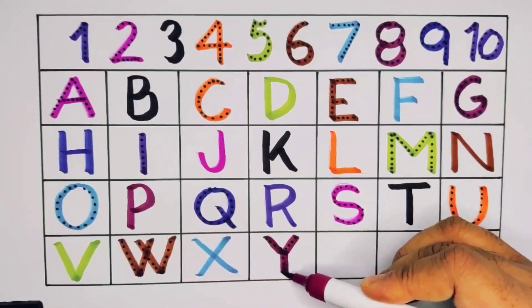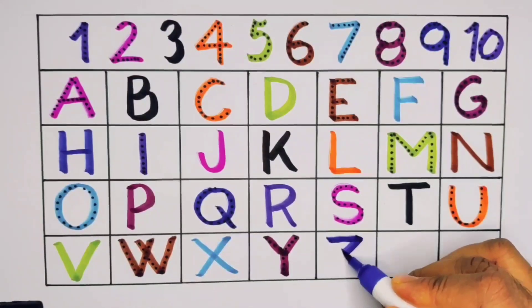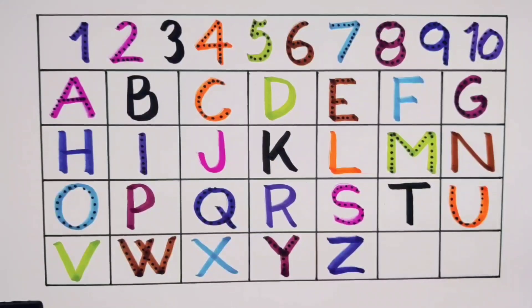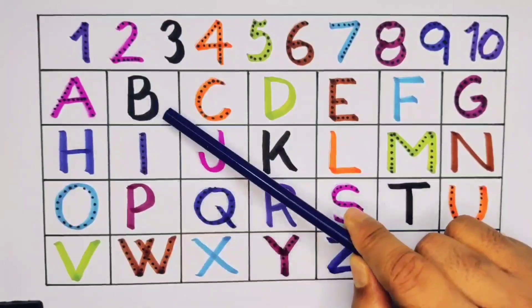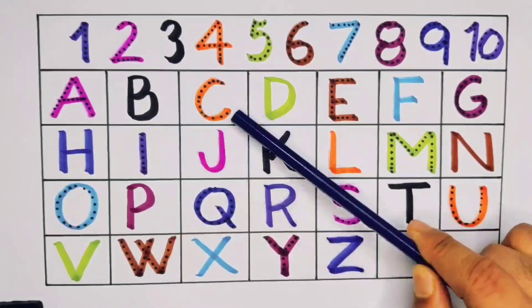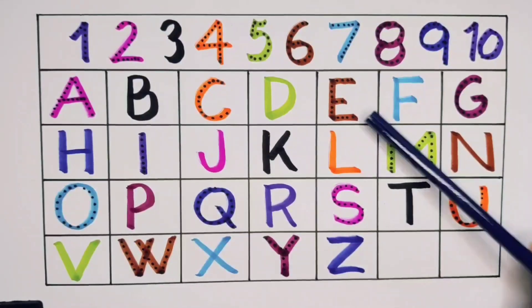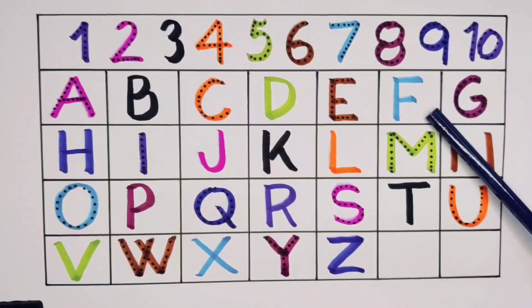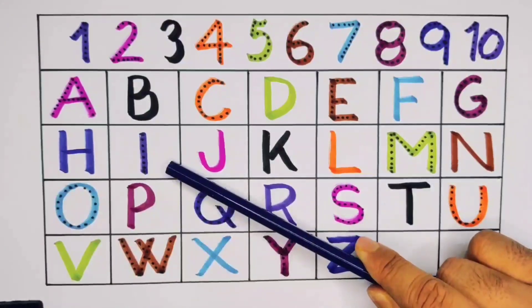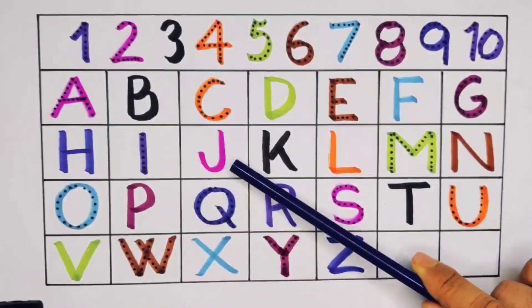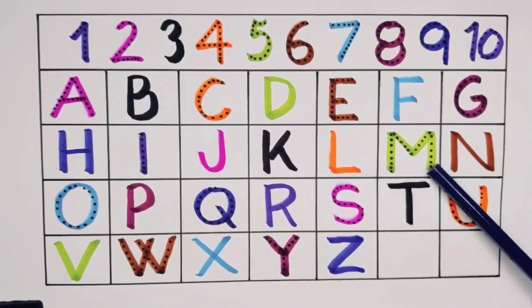What comes next, kids? It's X — X for x-ray. Next it's Y — Y for yak. Next it's Z — Z for zebra. What did we learn? We learned: A for aeroplane, B for bag, C for car, D for drum, E for eagle, F for frog, G for girl, H for house, I for ice cream, J for jackfruit, K for king, L for lion, M for monkey, N for nose.